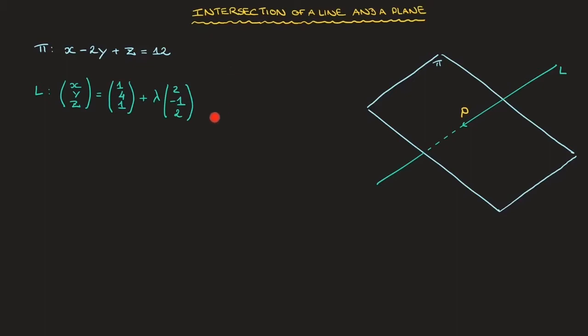On the left-hand side of the screen, we have both the plane's equation as well as the line's equation. To find the point of intersection, the first thing we need to do is rewrite the line equation in parametric form. Of course, if you already have the line's equation in parametric form, you needn't do this step.